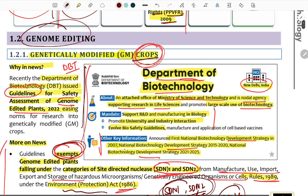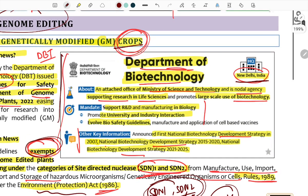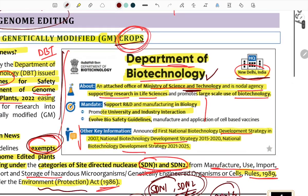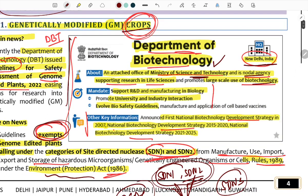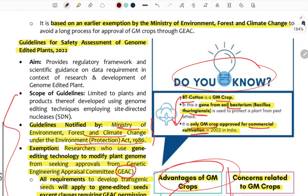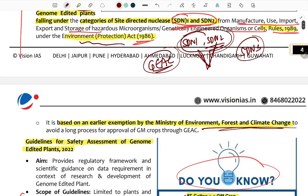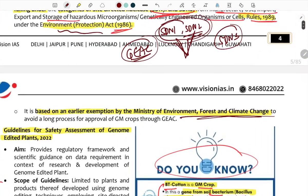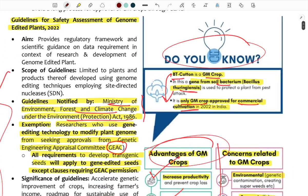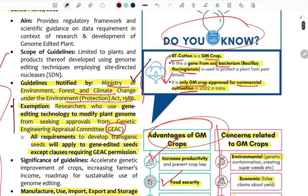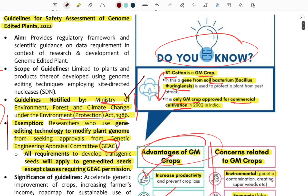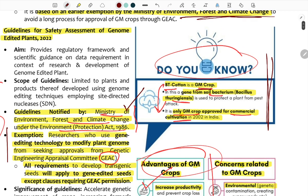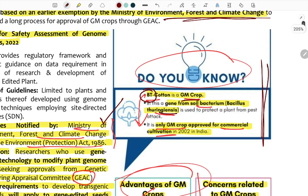The Department of Biotechnology (DBT) is under the Ministry of Science and Technology. Rules are released jointly by the Environment Ministry and the Science and Technology Ministry regarding environmental impact of biotechnology alterations. The Genetic Engineering Appraisal Committee (GEAC) gives approval and green signals. BT Cotton — Bacillus Thuringiensis cotton — is the only GM crop approved for commercial cultivation in India.